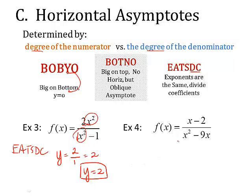On example four. Look at the power of x is a 1 on the top and x² on the bottom. So, it's bigger on bottom. So, this is BOBYO. So, this is big on bottom. Y = 0 is your answer. Y equals 0 is your horizontal asymptote.